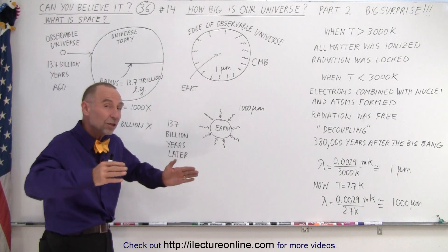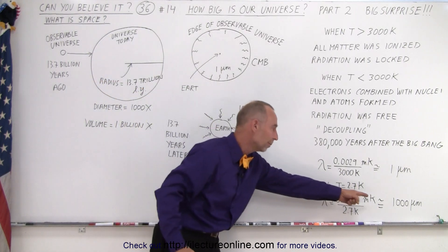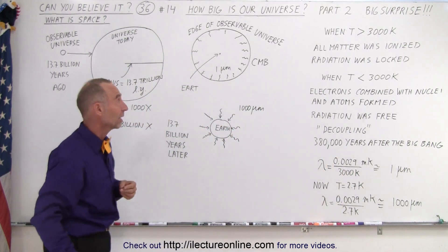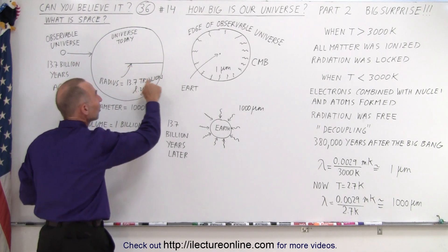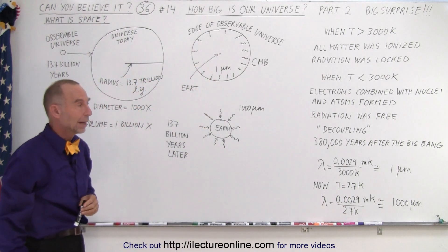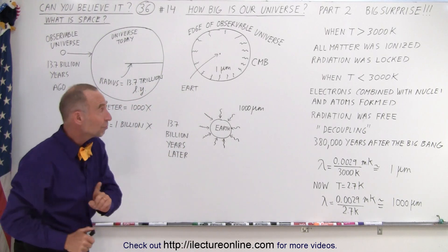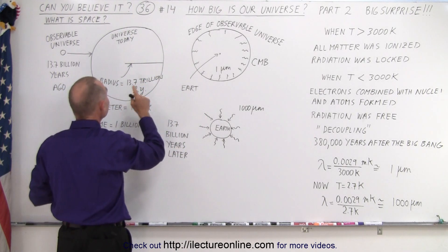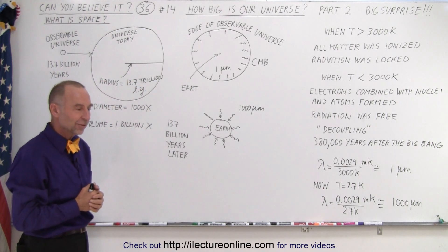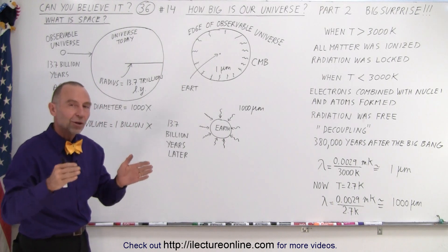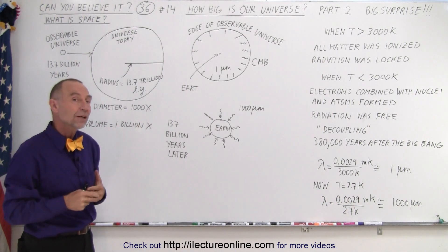And since the universe has expanded a thousand-fold in diameter, because otherwise the radiation couldn't have become a thousand micrometers in length, that means that now the radius of the universe today must be at least a thousand times what it was 13.7 billion years ago, at the point of decoupling, 380,000 years after the Big Bang. Which means that now the radius of the universe must be at least 13.7 trillion light years in radius. A thousand times the observable universe. And I really can't think of any other explanation for this.